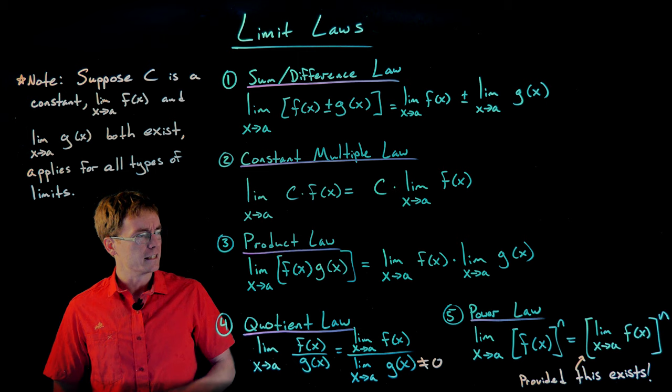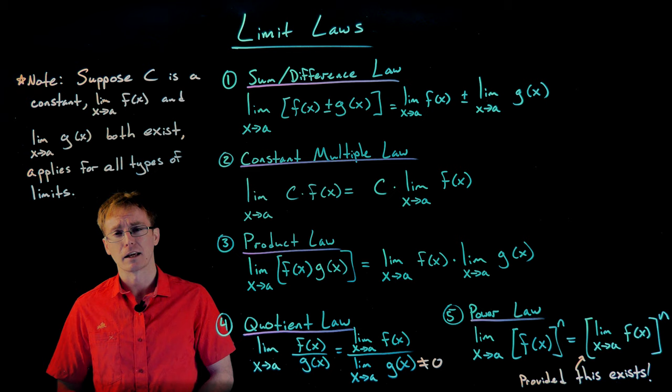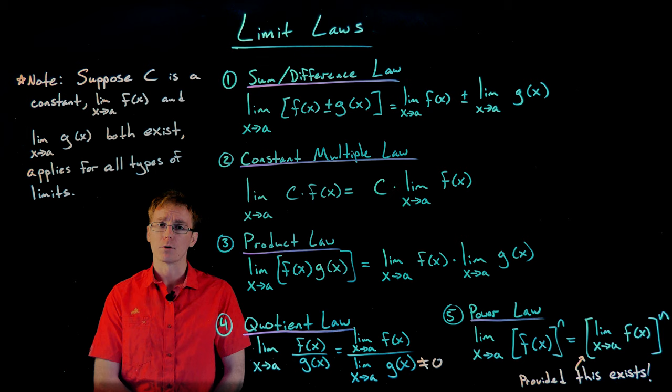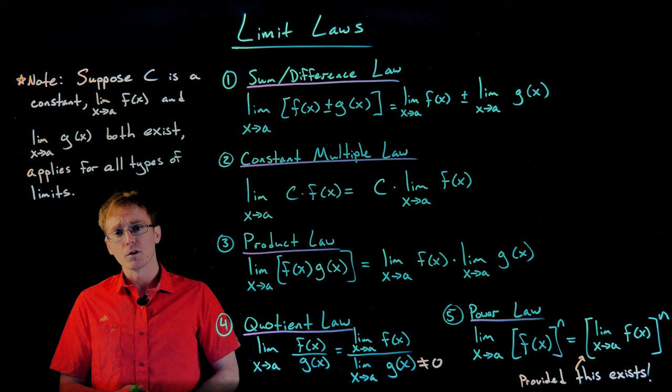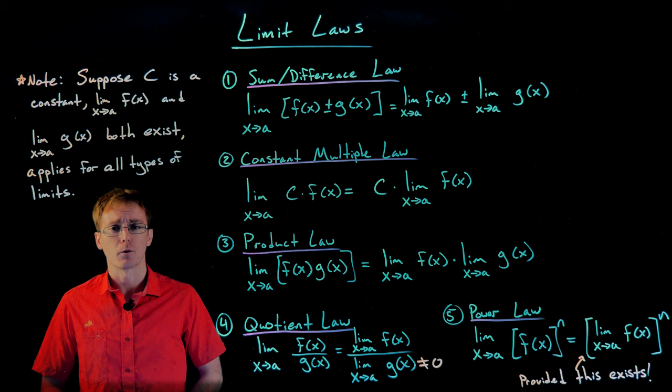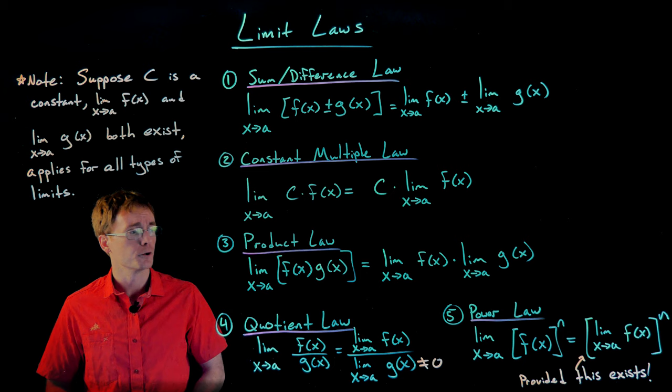If our function approaches a negative value while our power is a fractional exponent like one half, we could rewrite that as the square root of a negative, and that's what we want to avoid. The exponent n in the power law can really be any real number. If it's a whole number like one, two, three, or four, it's just the function raised to those powers. If it's a fractional exponent like one half, one third, or one fourth, it's like taking the square root, cube root, or fourth root — so the power law will be really helpful when we take limits of root functions.